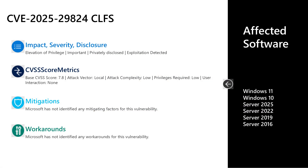Let's dive into a few of the vulnerabilities from today's release. The first one is CVE-2025-29824, an important elevation of privilege vulnerability in the Common Log File System, or CLFS. This one is important severity, privately disclosed, but exploitation has been detected prior to release. The CVSS base score is 7.8 on that scale of 10. The attack vector is local, the attack complexity is low, low privileges are required, and no user interaction is required to leverage this vulnerability.